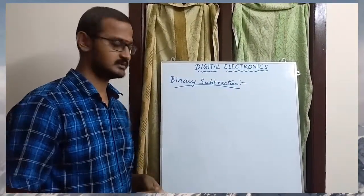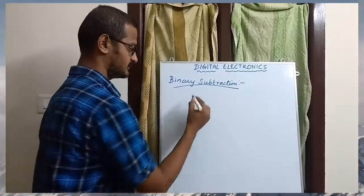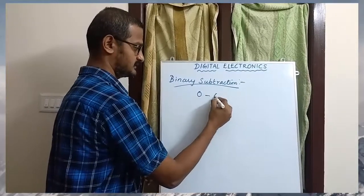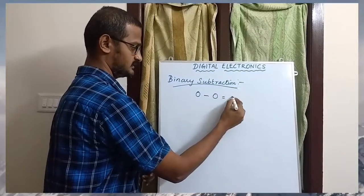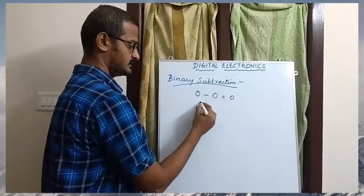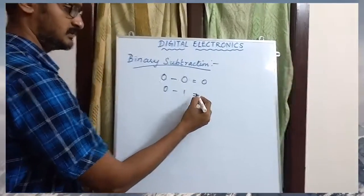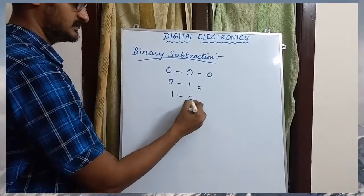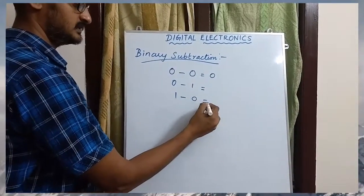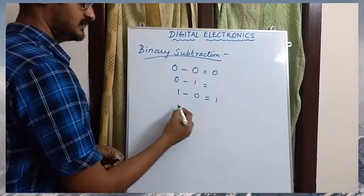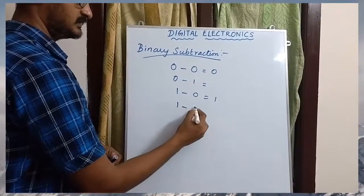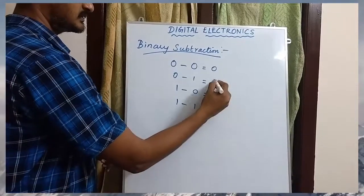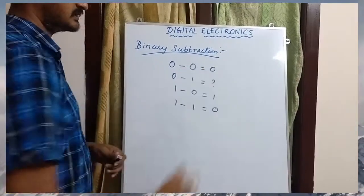Let us look at more operations: 0 plus 1 is 1, 0 minus 0 is 0, 0 minus 1, 1 minus 0, 1 minus 1 — these are the basic binary operations.